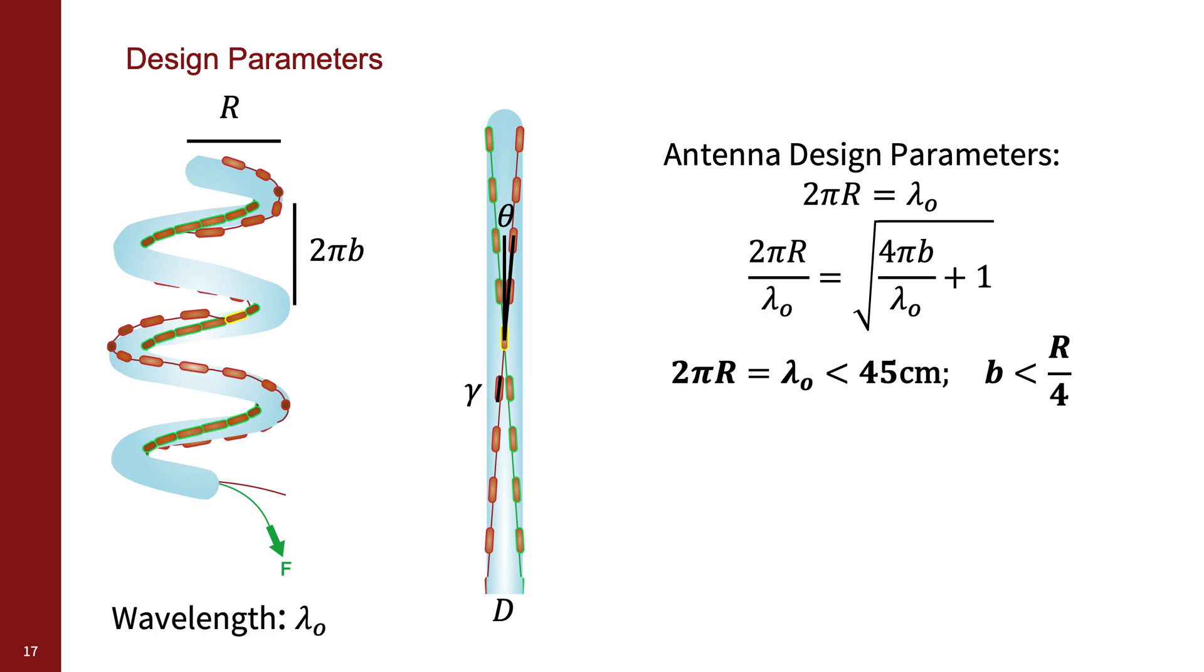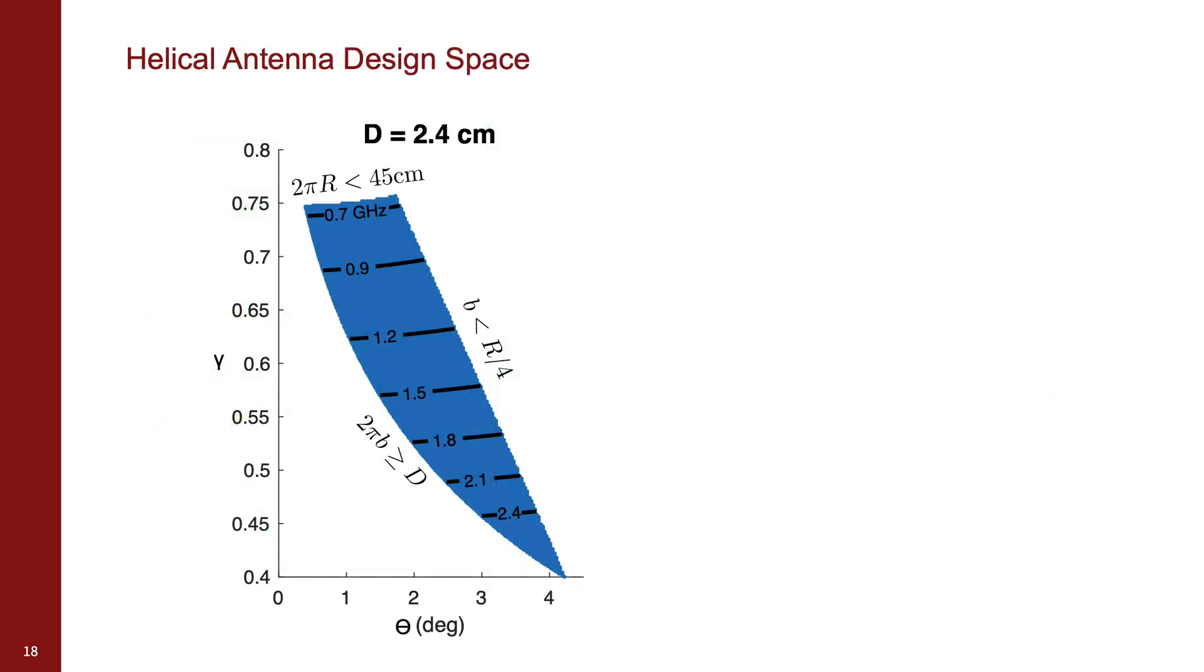Together, these equations give two inequality constraints, given that we would like to target radio frequencies above 700 megahertz. The physical size of the robot imposes a final constraint, limiting the minimum pitch to avoid self-intersection. For a given tube diameter, the potential design space looks like this. The operating frequencies for a design form approximately horizontal lines across the space.